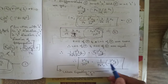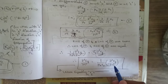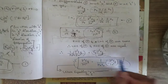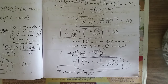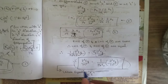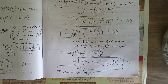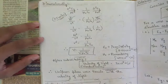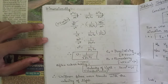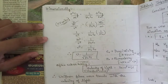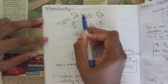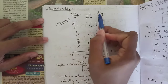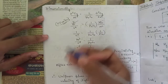The two minus signs cancel, so 1 by mu naught times dou² Ey by dou x² equals epsilon naught dou² Ey by dou t². Rearranging: dou² Ey by dou t² equals 1 by mu naught epsilon naught times dou² Ey by dou x². This equation is the wave equation in terms of electric field.